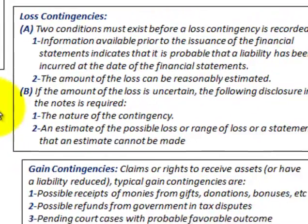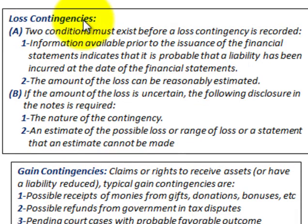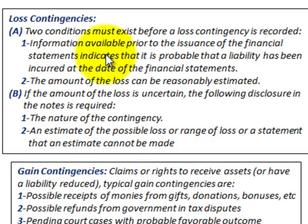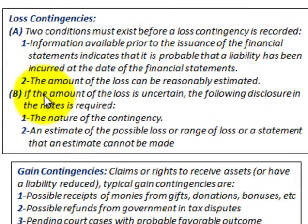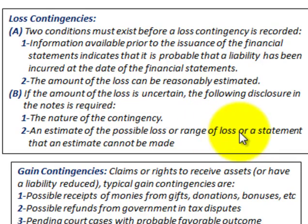Reviewing gain and loss contingencies: for loss contingencies, two conditions must exist before a loss contingency is recorded. First, information available prior to issuance of the financial statements indicates it is probable that a liability has been incurred at the date of the financial statements. Second, the amount of the loss can be reasonably estimated. If the amount of loss is uncertain, notes disclosure is required: (1) the nature of the contingency, and (2) an estimate of the possible loss or range of loss, or a statement that an estimate cannot be made.